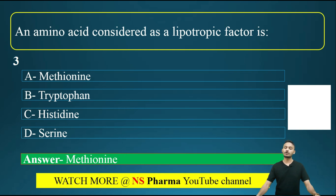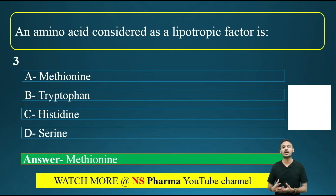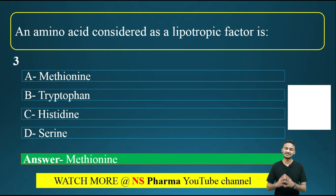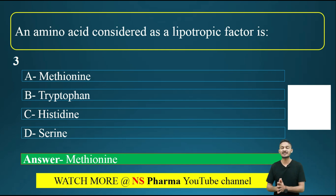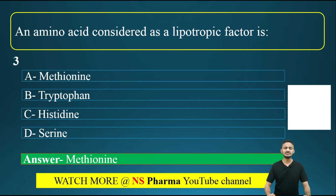Lipotropic factors are substances which increase the removal of fat from the liver or decrease the deposition of fat in the liver. Examples of lipotropic factors include: choline, methionine, betaine, vitamin B9 (folic acid), and vitamin B12 (cobalamin). These are the lipotropic factors.